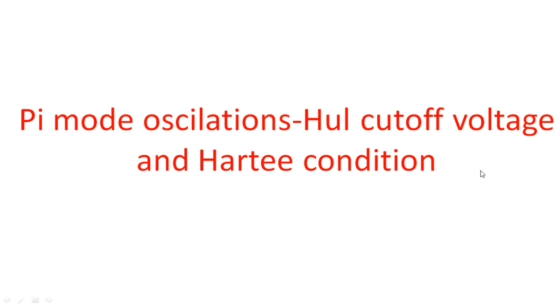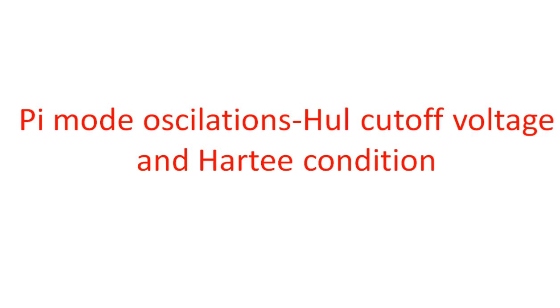In this video I will explain different types of modes like pi mode oscillations, and what is the cutoff voltage and RT condition for this magnetron oscillator. In the previous video I explained about the magnetron oscillator operation with eight different cavities used to produce oscillations. When there is no magnetic field the electron is attracted by the anode, and when a high magnetic field is applied, a force is exerted on the electron so that it is repelled back towards the cathode.